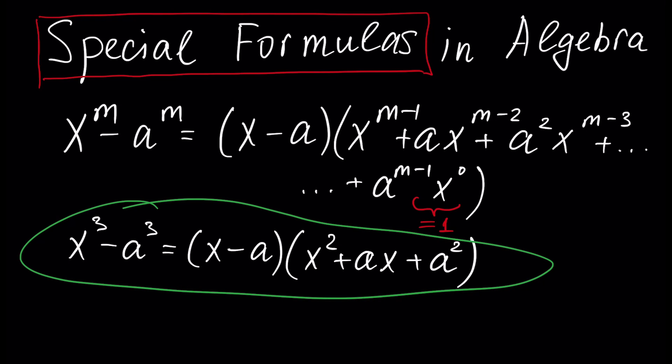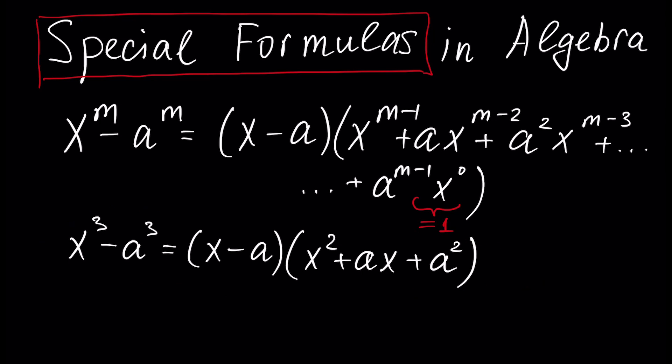A special case of this formula for m equal to three is a very famous formula: x cubed minus a cubed is represented as x minus a times another polynomial of degree two. To prove these formulas we need Bezout's theorem, which we covered in our previous tutorial. It's important to watch our algebra playlist consecutively to build a strong understanding.